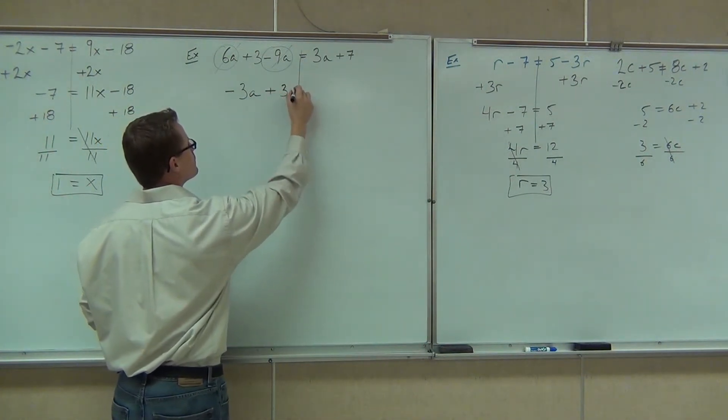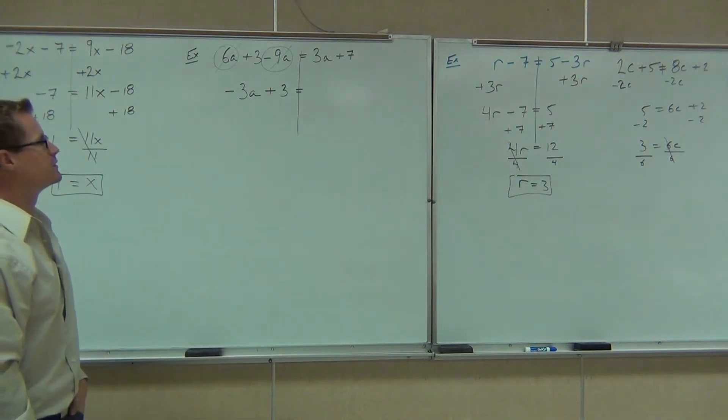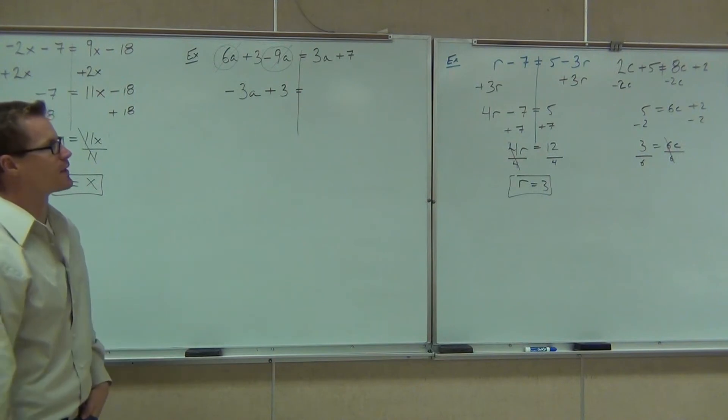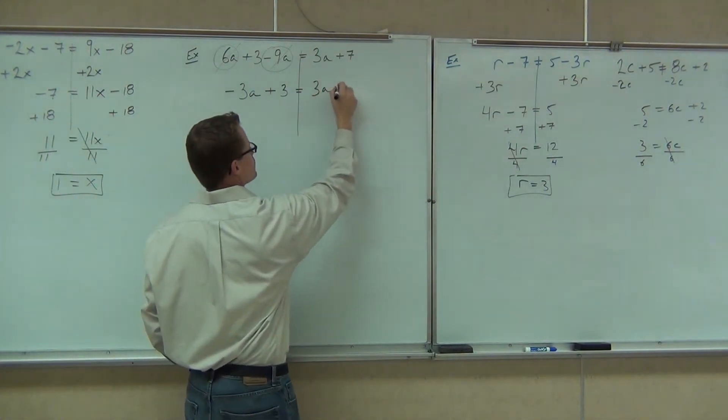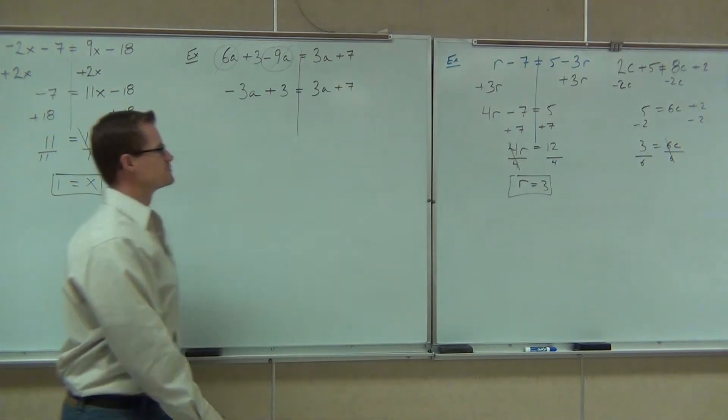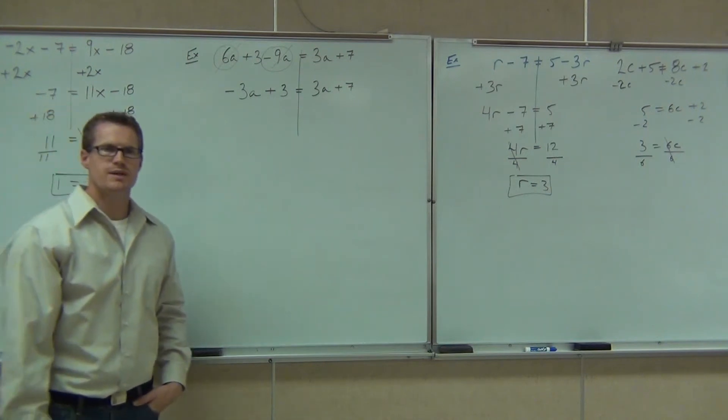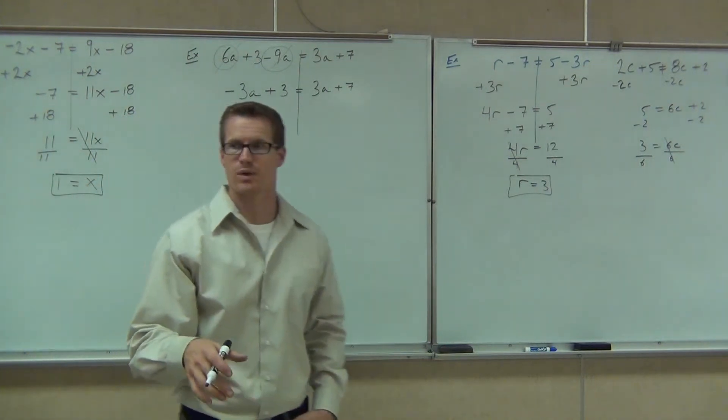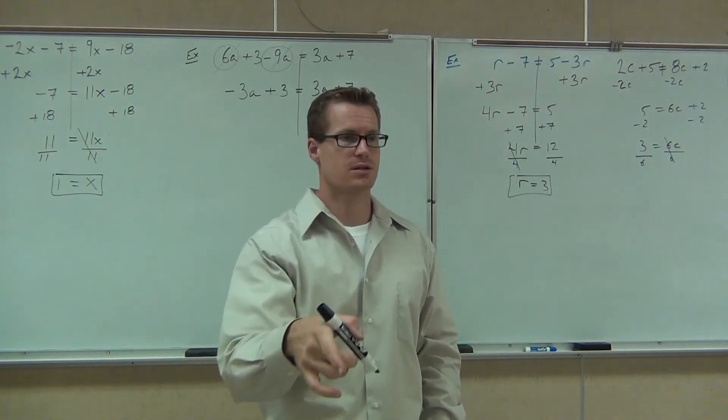So we'll have negative 3a plus 7. What are we going to do now? Now that we've combined our like terms, what do we have? Get rid of the smaller variable. What is our smaller variable in this case? 3a. Wait, 3a or negative 3a? Negative 3a. How are we going to get rid of it? Add.